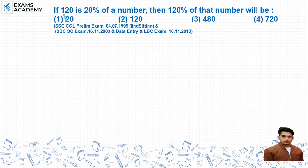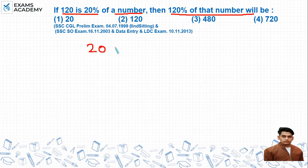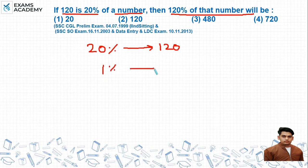The question is: if 120 is 20% of a number, then 120% of that number is what? Given that 20% of the number is 120, we find 1% by dividing 120 by 20, which gives 6. So 1% of the number is 6, meaning the number itself is 600.